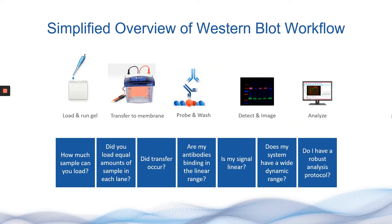Western blot is a technique used by many labs to study a specific protein of interest within a complex mixture of proteins. The process starts by loading and running a gel to separate proteins based on size. Researchers then transfer the proteins to a membrane and use a primary antibody to probe for a particular protein of interest.